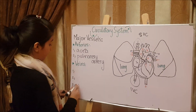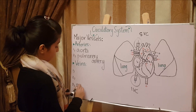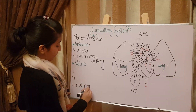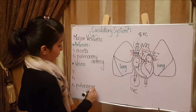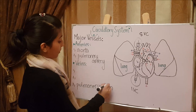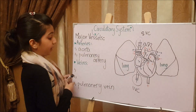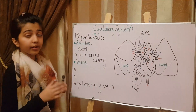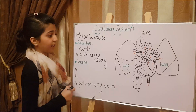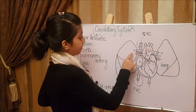The last vessel is the pulmonary vein, which carries oxygenated blood from the lungs towards the heart. You can see four of them right here.